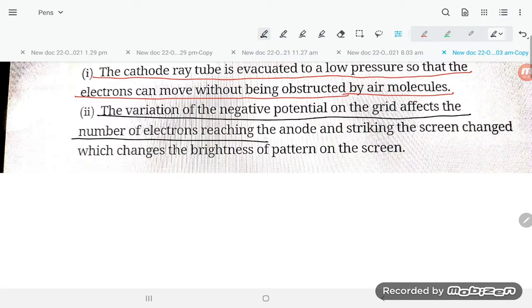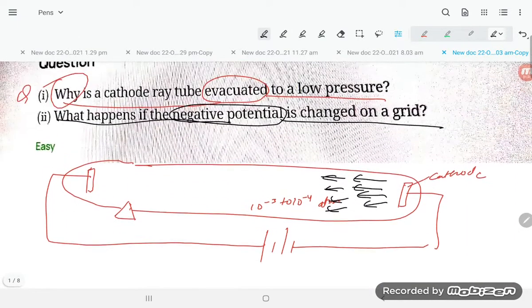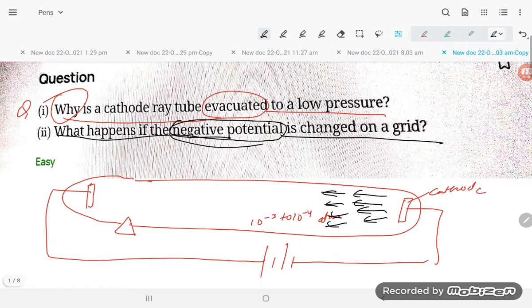...the number of electrons reaching the anode and striking the screen, which changes the brightness of the pattern on the screen. So if you are changing the negative potential on the grid, everything will be changed - the speed of cathode rays will be changed, the brightness will be changed.